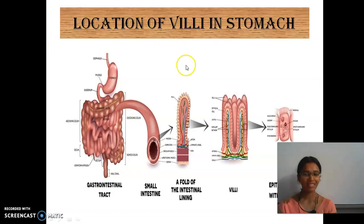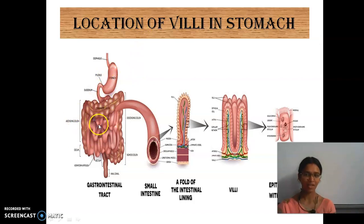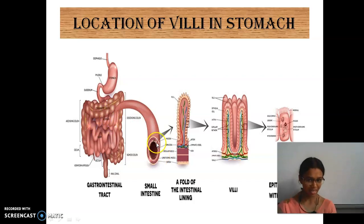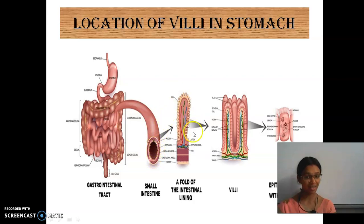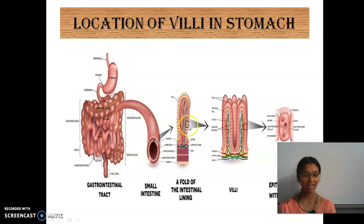Now we'll see where villi is located. Stomach, large intestine, small intestine — villi is inside the walls of the small intestine. Inside you can see spike-like structures. These are finger-like structures — it looks like fingers.